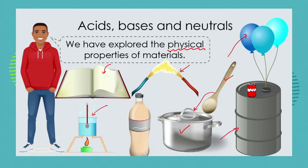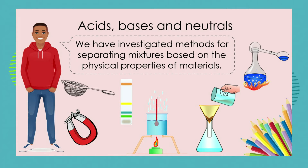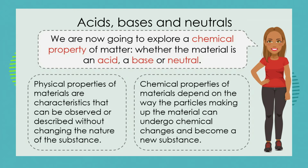In every instance in our past lessons, we've been concerned with the physical properties of materials. Our methods of separation were based on physical properties — what the size of the particle was, whether it was magnetic or not. But now as we move on to our new topic, acids, bases and neutrals, we are going to start looking at chemical properties of matter, specifically whether a material is an acid, a base, or neutral.